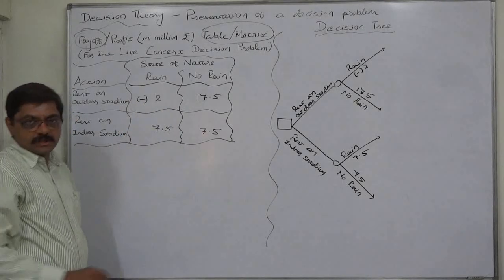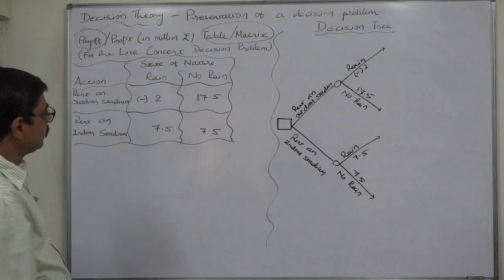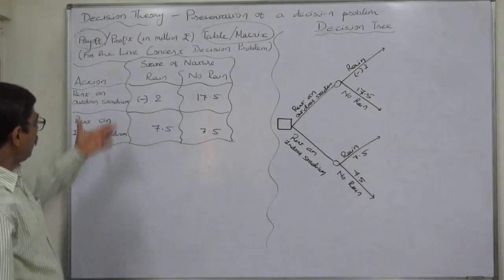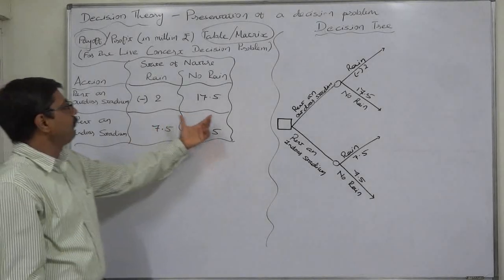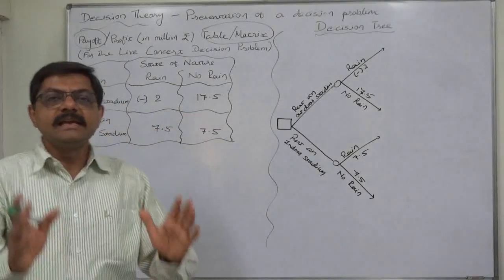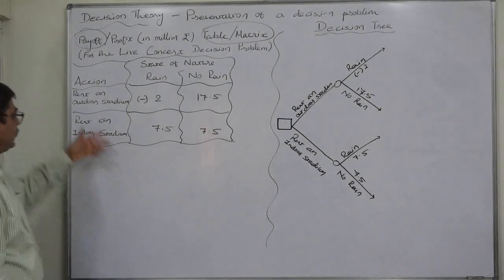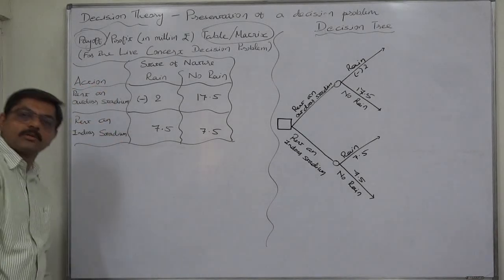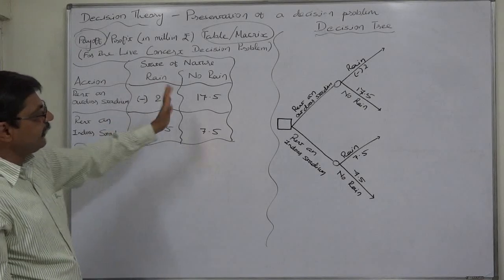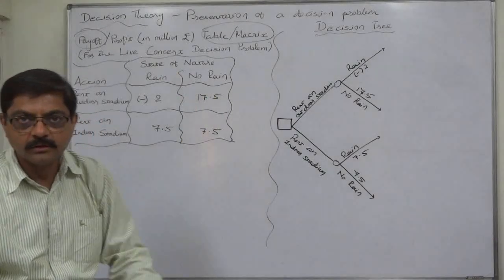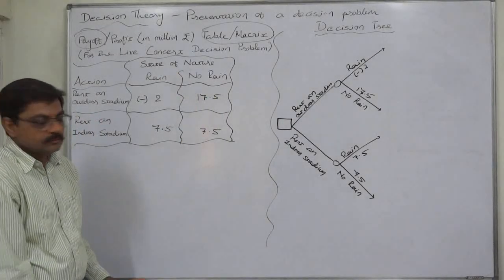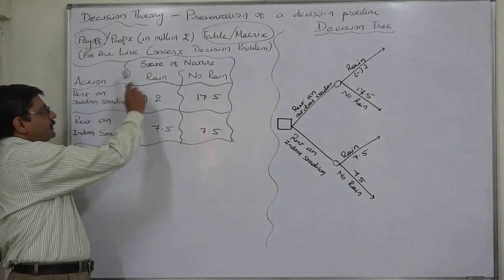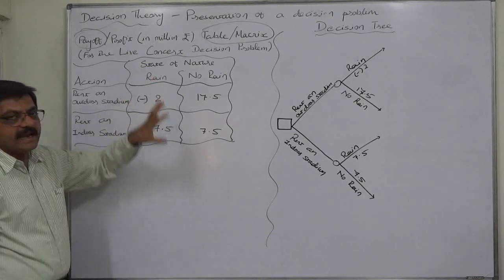This is a two-dimensional matrix or table. The best thing with this type of payoff matrix is whatever number of possible alternatives or whatever number of possible states of nature can be easily included in the payoff matrix. Say instead of two there are ten possible alternatives or actions or acts or strategies, we can easily include them. Similarly if there are five, four, six, seven, eight, nine, ten or more possibilities, mutually exclusive and exhaustive, they can be easily included in the payoff matrix.